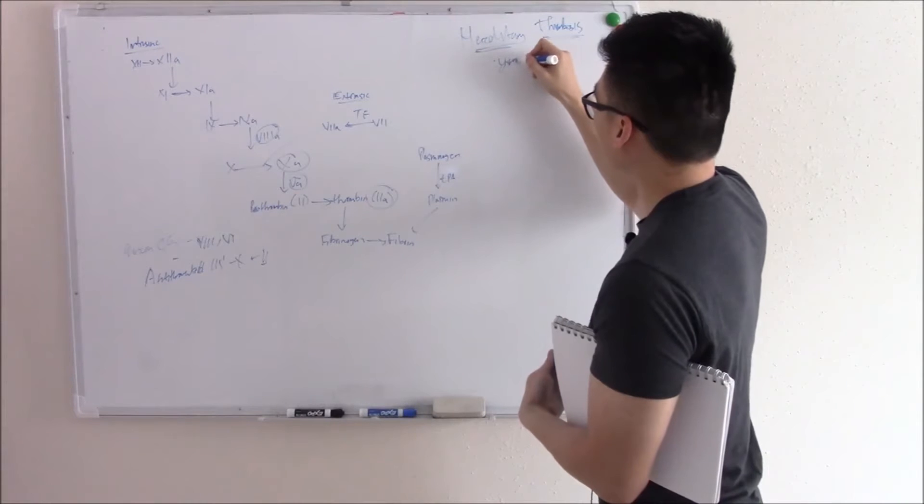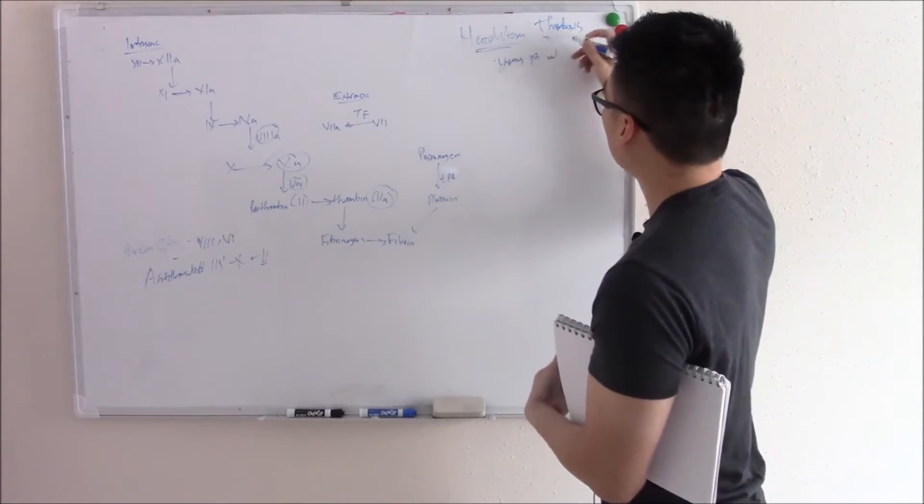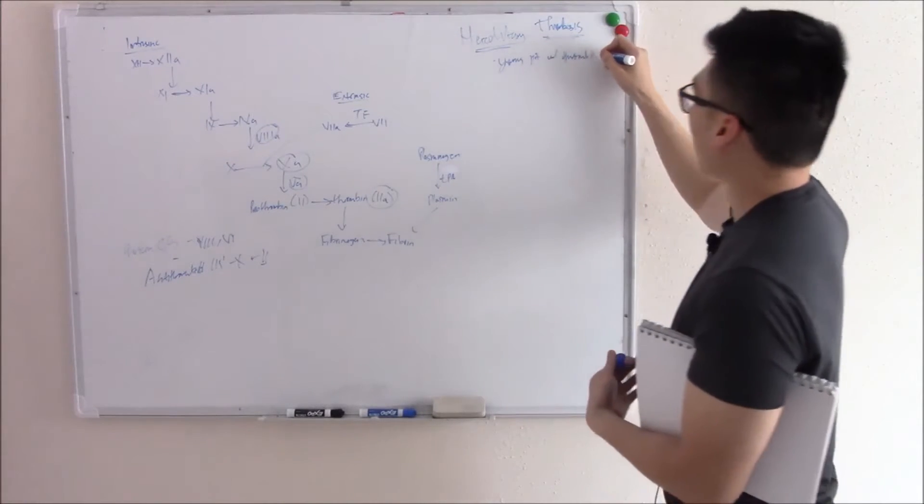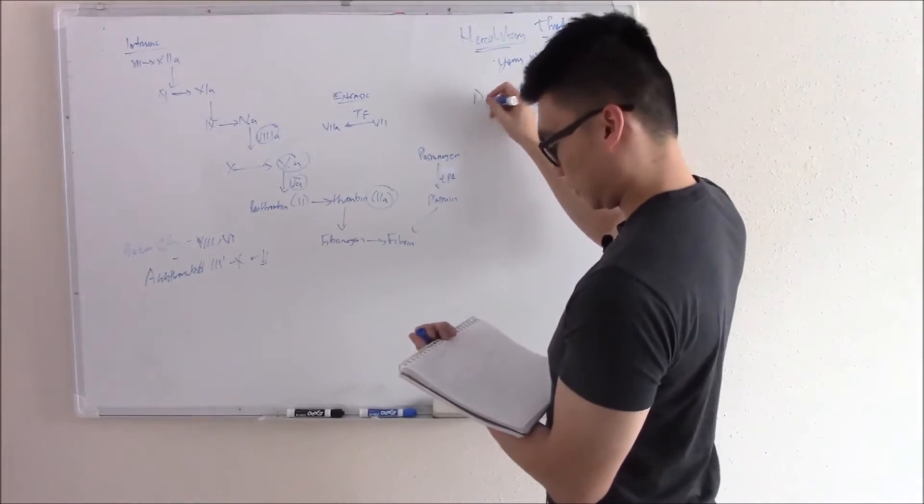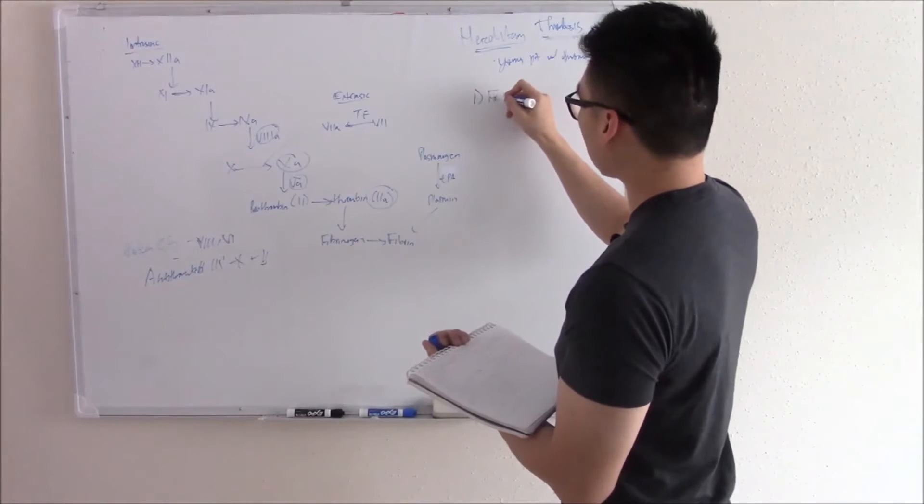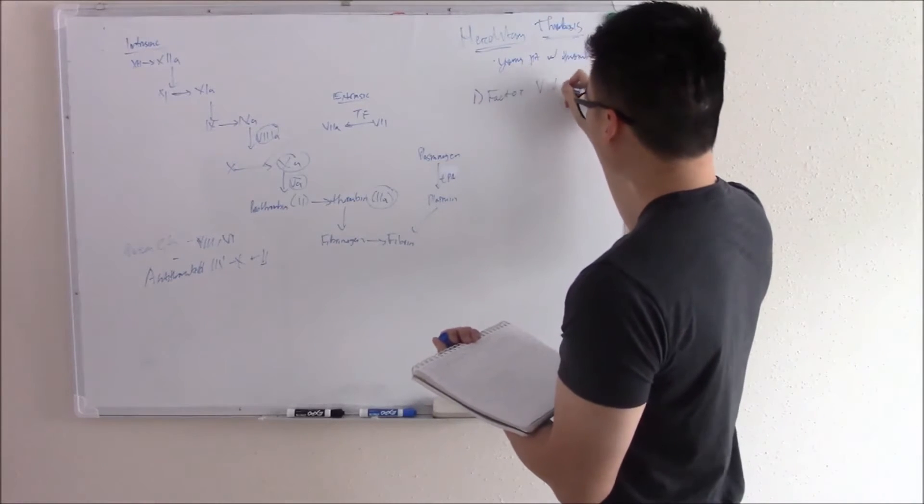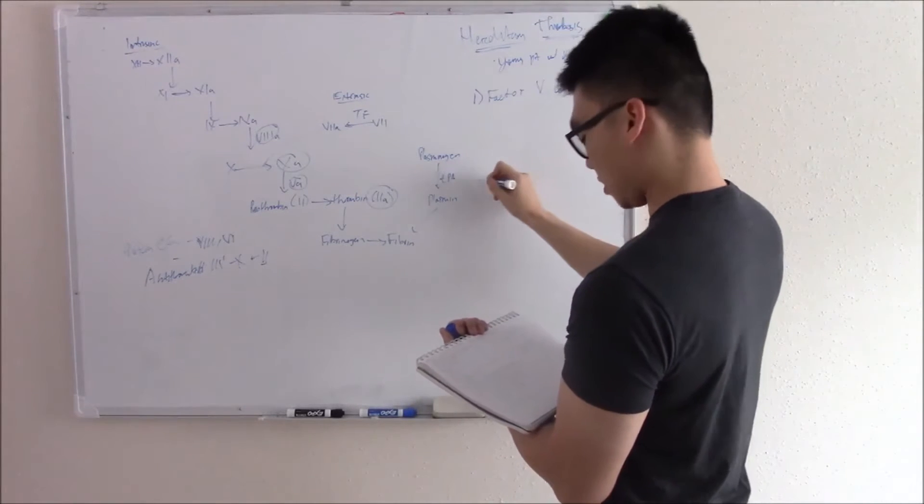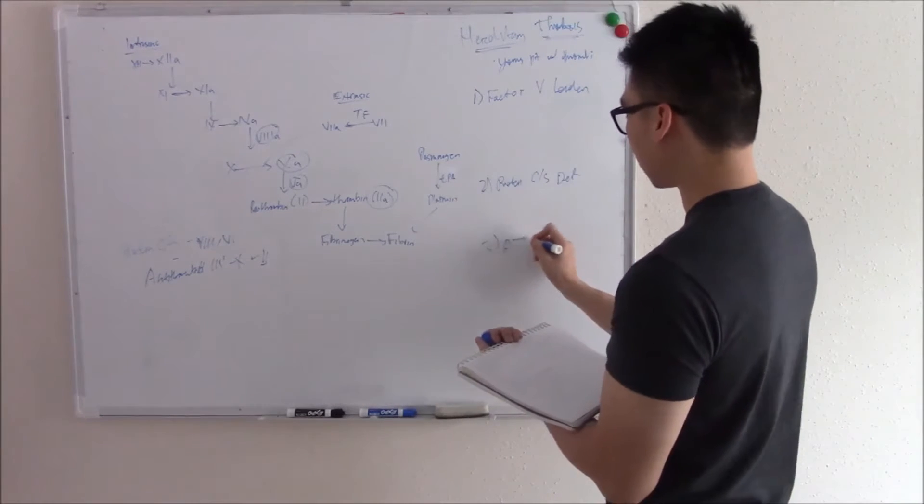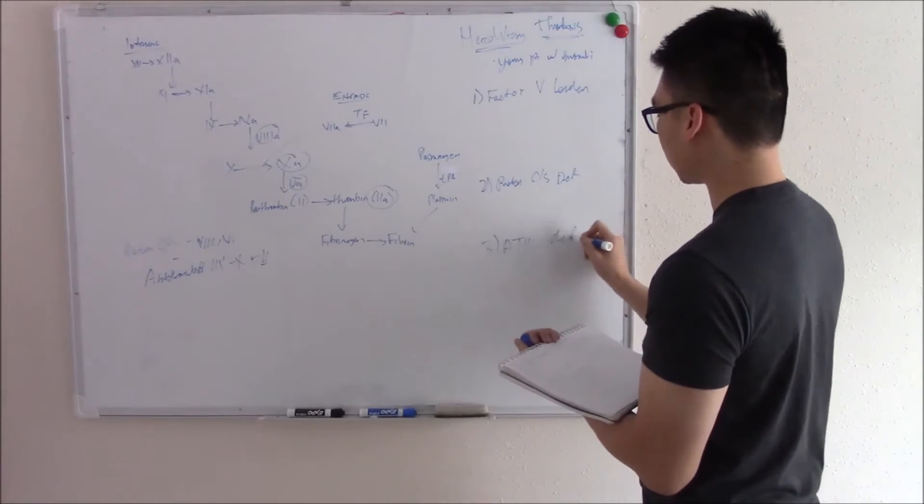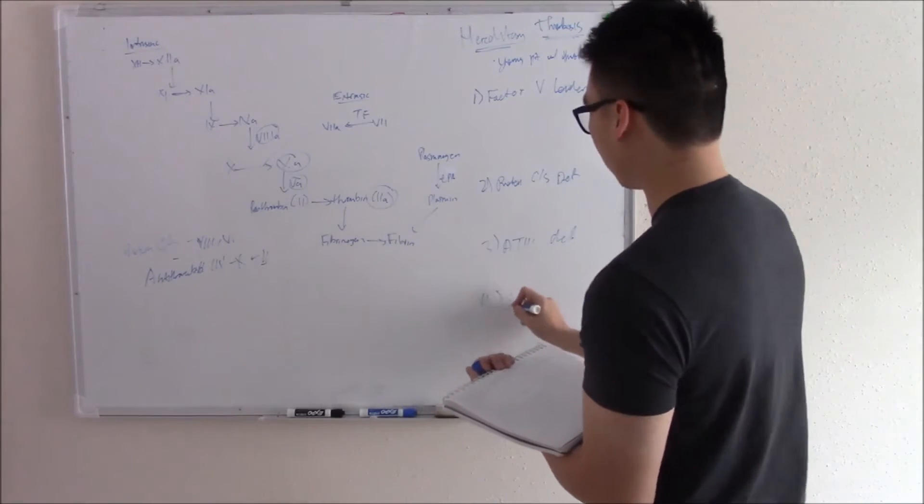So young patients with thrombi. And there aren't too many of them. Only four. So you have factor V Leiden. You're going to have protein C S deficiency, antithrombin 3 deficiency, and something called prothrombin mutation.